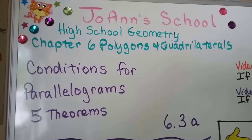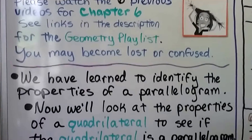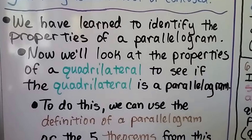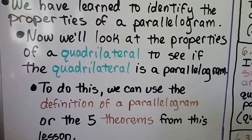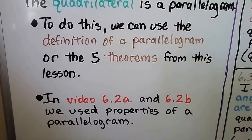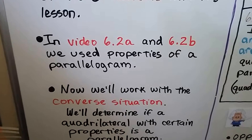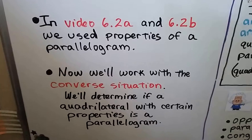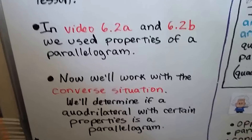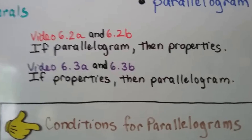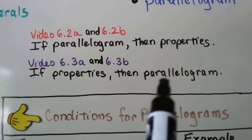Conditions for parallelograms — we have five theorems. This is lesson 6.3a, with six previous videos for chapter 6 in the geometry playlist. We've learned to identify the properties of a parallelogram, and now we'll look at the properties of a quadrilateral to see if it is a parallelogram. In the two previous videos 6.2a and 6.2b we used properties of a parallelogram — now we'll work with the converse: if a quadrilateral has those properties, then it's a parallelogram.